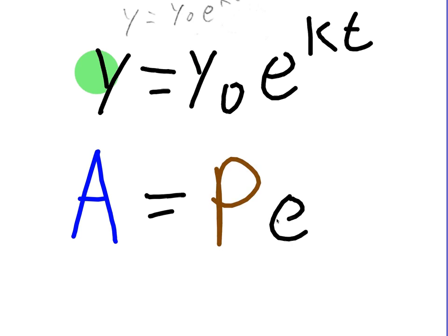times e to the r. So we can see then that r is basically the same as the growth constant, e to the rt.